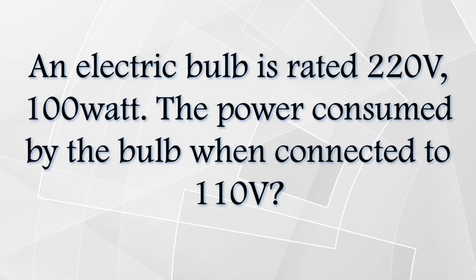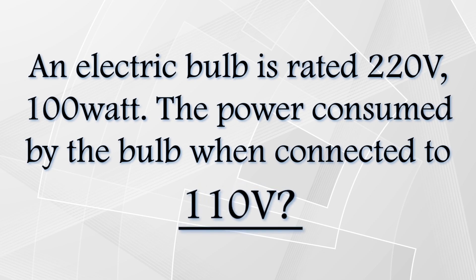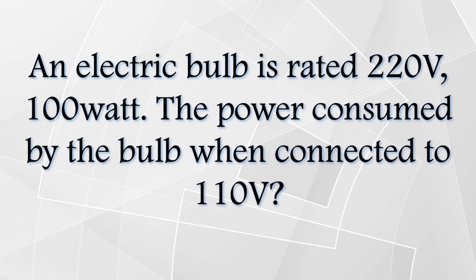The question is based on the concept of power consumed by a DC circuit. In the question, it is given that the rating of a bulb is 220 volt, 100 watt. We have to find the power consumed by the bulb when it is connected to 110 volt. For that, first we have to find out the resistance of the bulb, and then find out the power when it is connected to 110 volt.